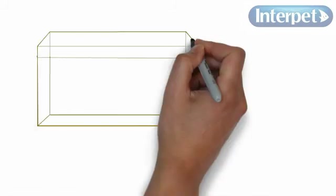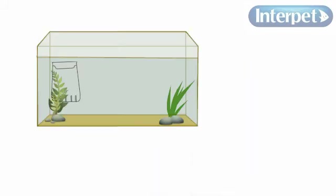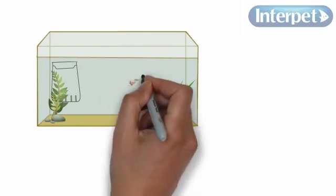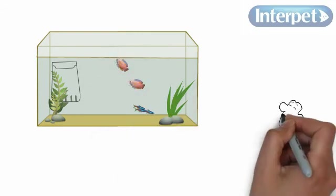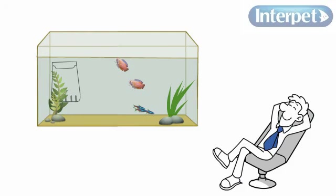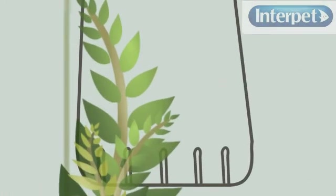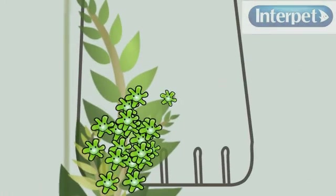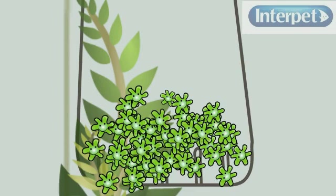Although this all sounds a bit scary and a bit scientific, it really is simple to get going if you follow the rules. Within a matter of weeks, your filter will be bursting with bacteria, known as a mature filter, who happily clean up the fish mess and make the water healthy and your fish happy.